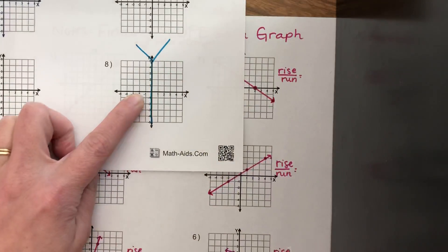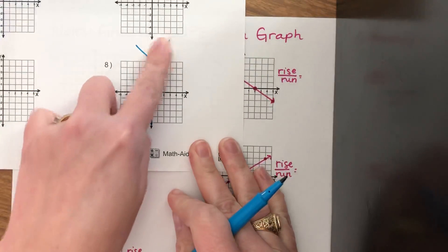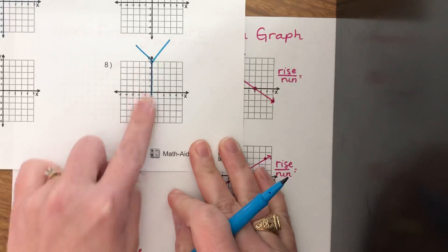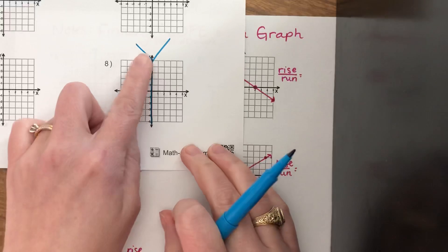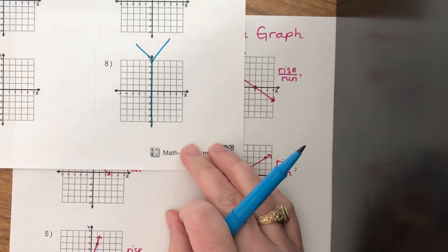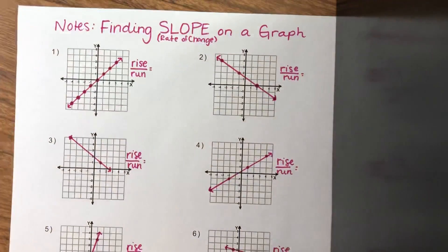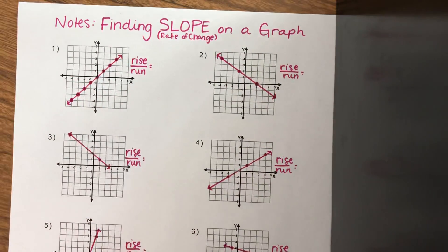So if you get them confused — if you make a y, that is the y-axis. You can't do that with the x-axis; it wouldn't work. So the axis that you can turn into a y is how you can remember that that is the y-axis.